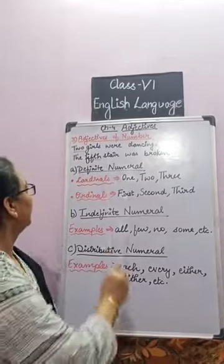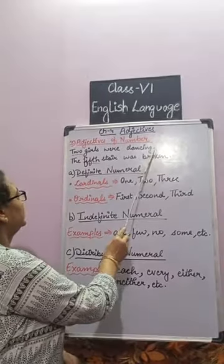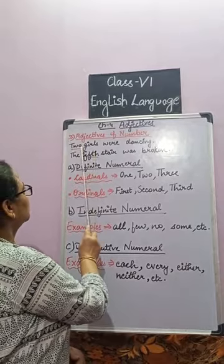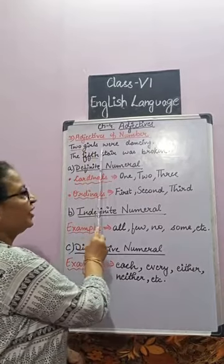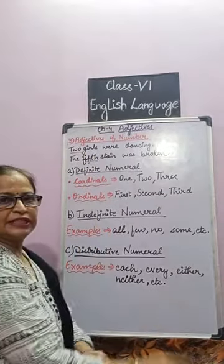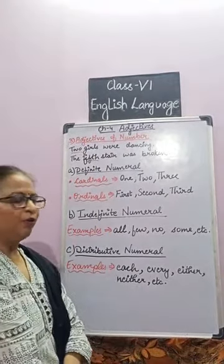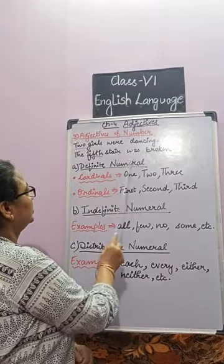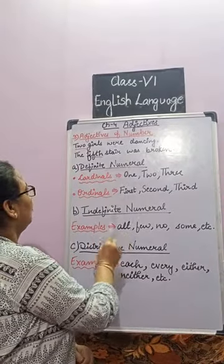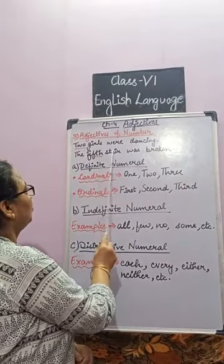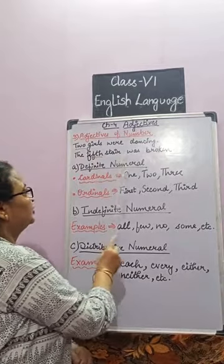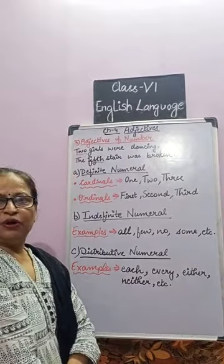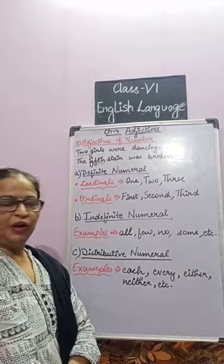For example: two girls were dancing. How many girls were dancing? The answer is two. So here, two is telling the number of a noun. One more example: the fifth stair was broken. What order of stair? Fifth. So here, fifth is telling the order of a noun.